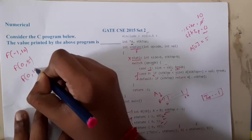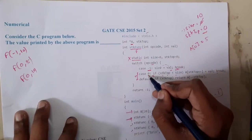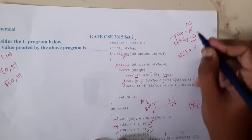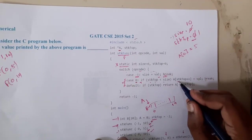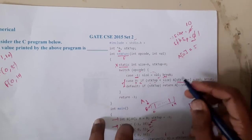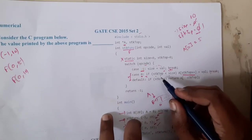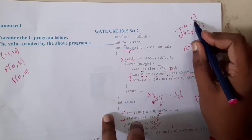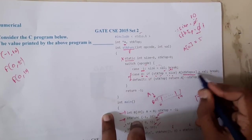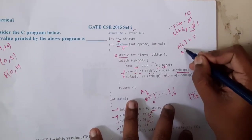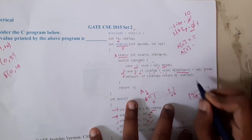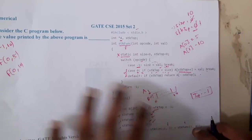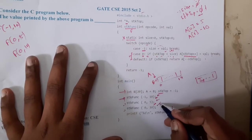Next we call f(0, 10). We come to case 0 again. stk_top is now 1, and we check: is 1 less than 10? Yes. So we do a[stk_top++] = 10, storing 10 in a[1], and stk_top increments to 2.